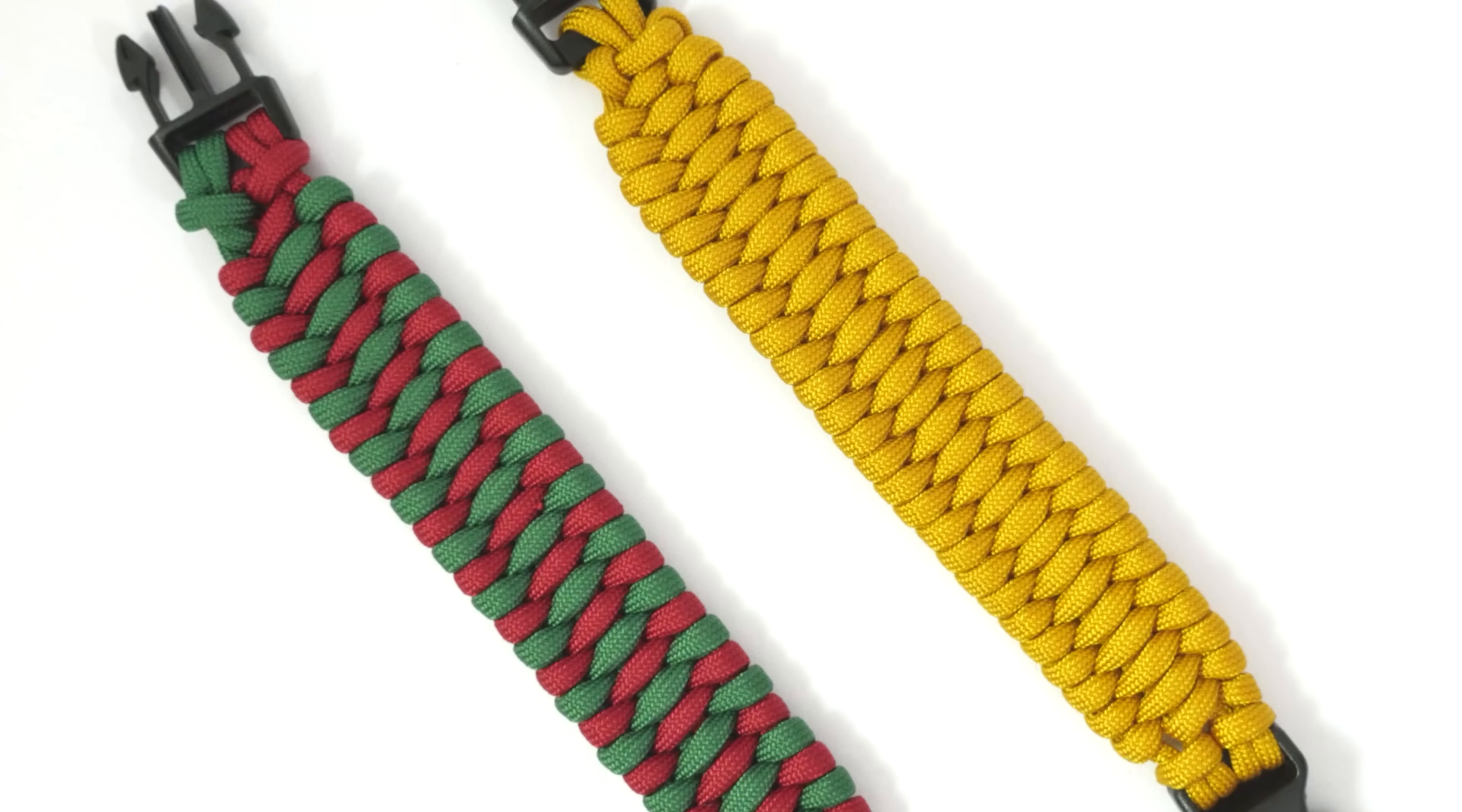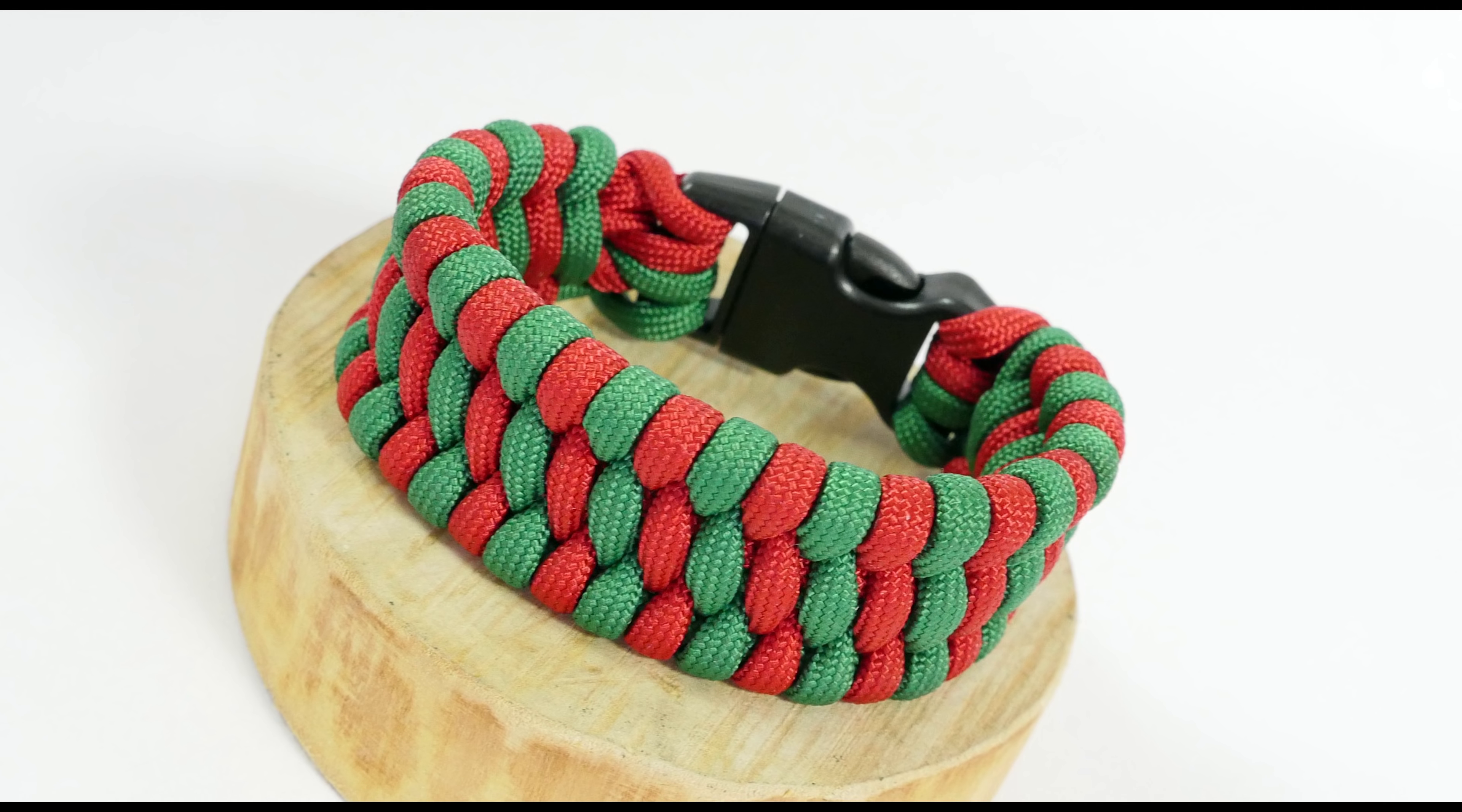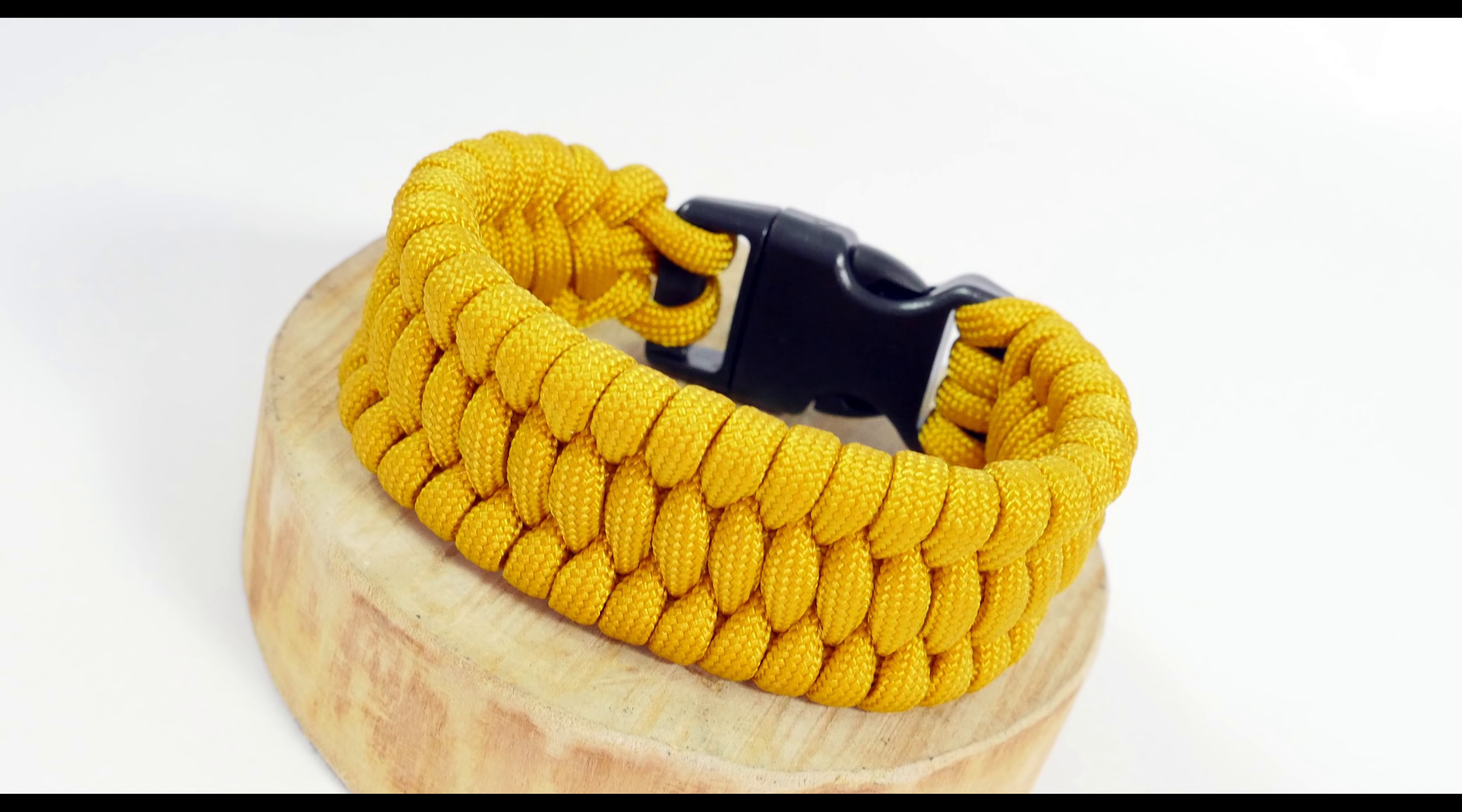So this is the trilobite or ladder rack paracord bracelet. You can do it in a single tone, two tones, or even more if you get creative. Guys, I hope that I made this tutorial clear enough. Thank you very much for joining me today, and see you next time.